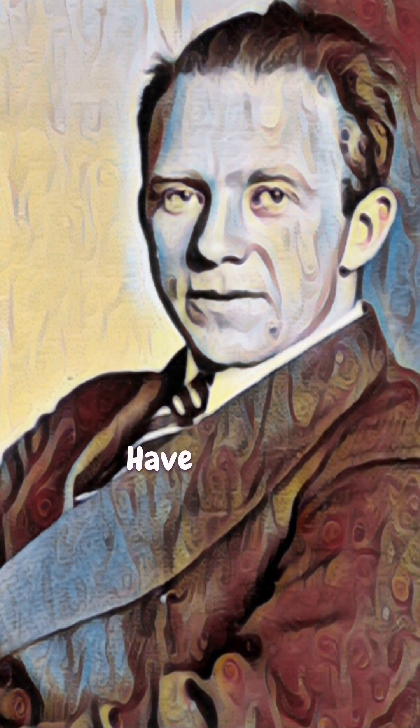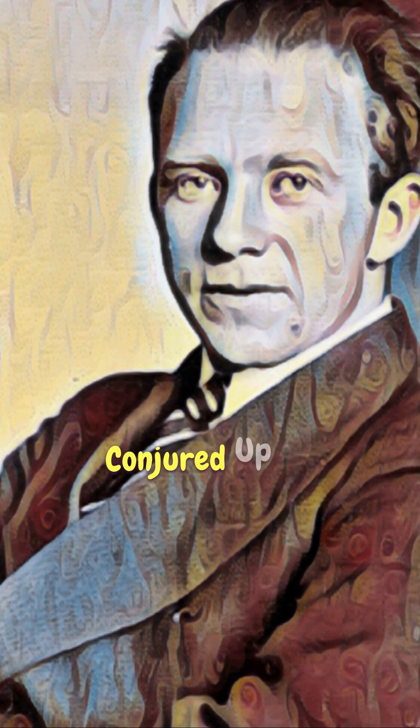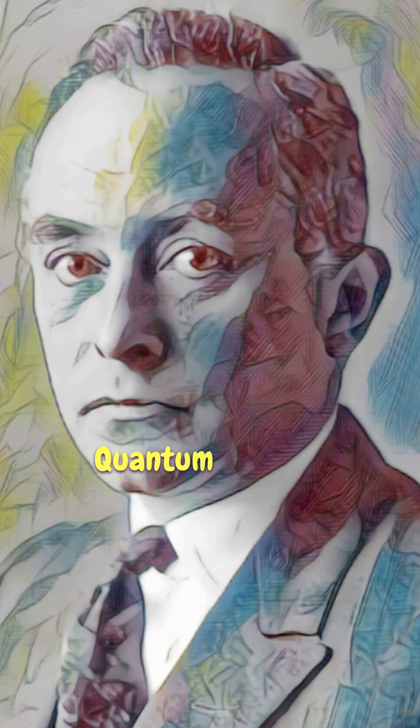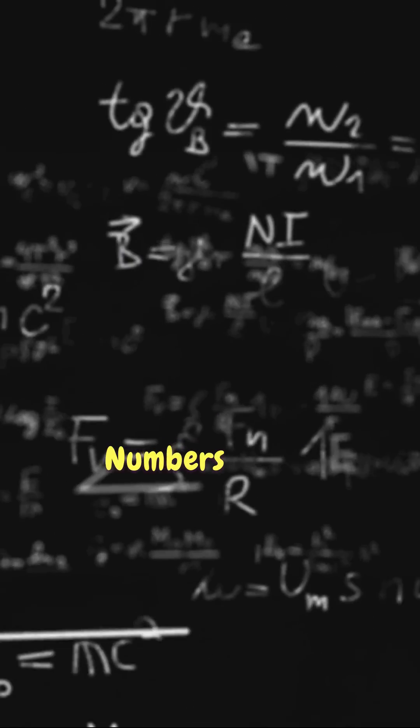Cold open folks, in the realm of quantum mechanics there are two major formulations. First up, we have matrix mechanics, conjured up by the brilliant minds of Heisenberg and Born. They introduced a new way of looking at quantum systems, using arrays of numbers called matrices.